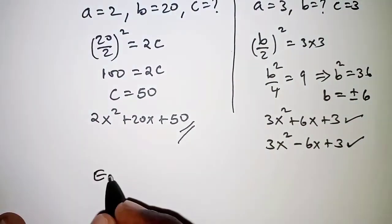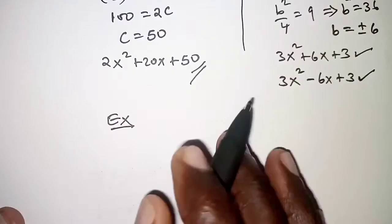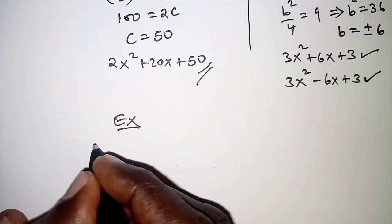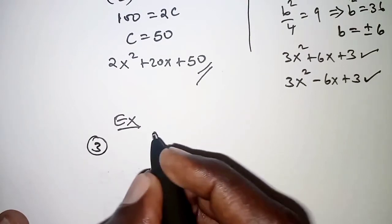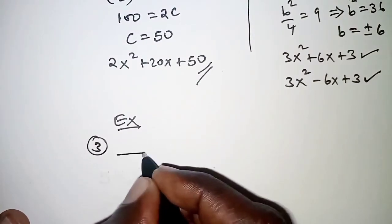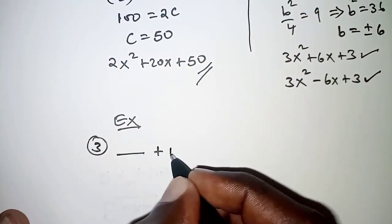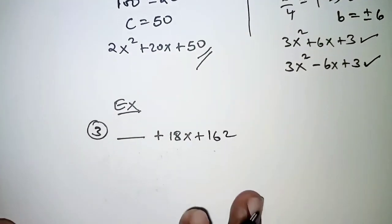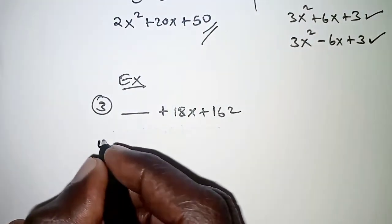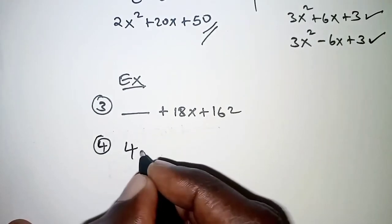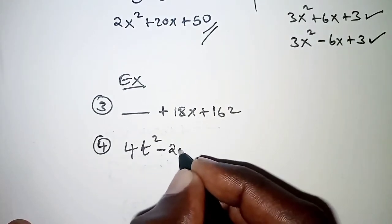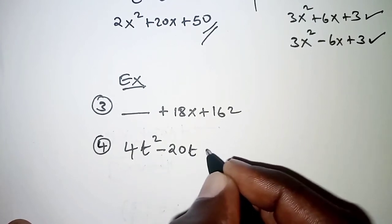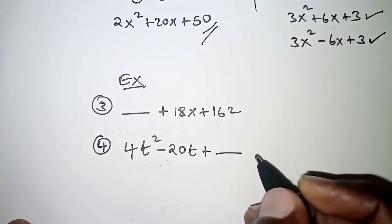And that is it. I have an exercise for you. So let's have it as a continuation. Number 3, try to find this term that is missing. And finally we have 4t² - 20t + ?.